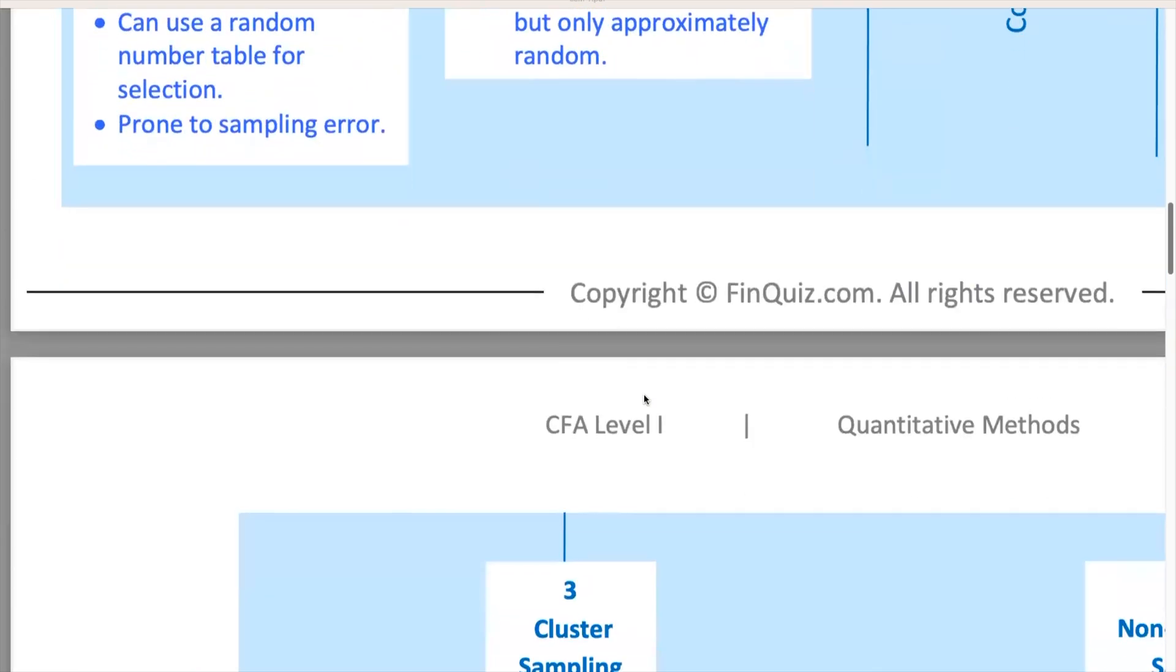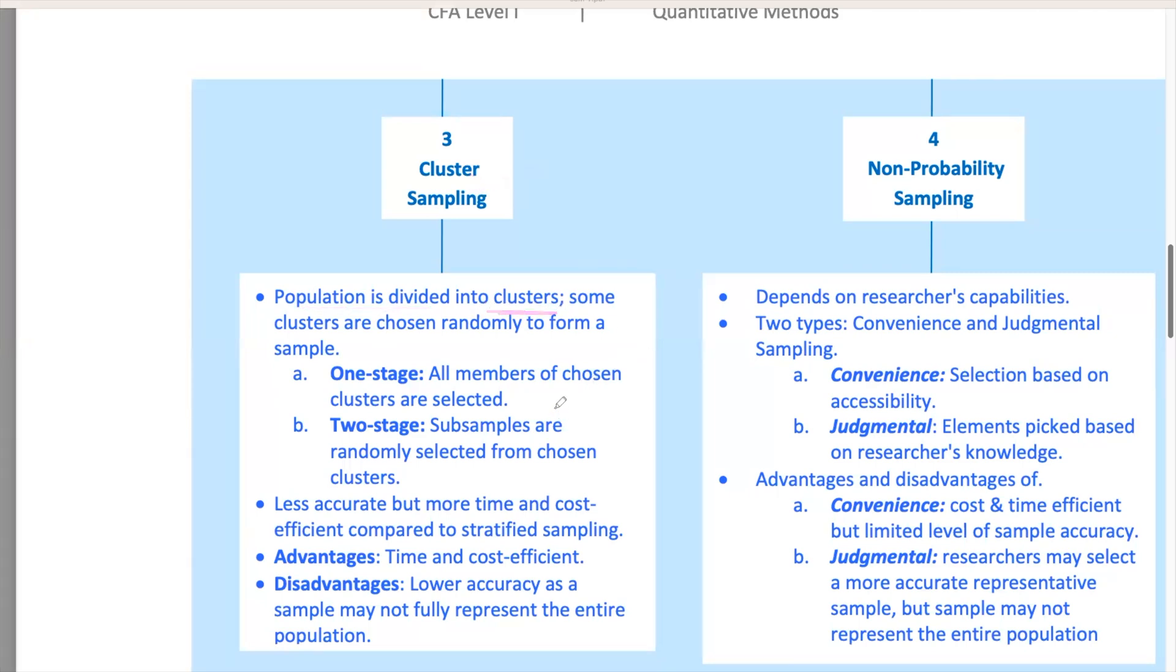Cluster sampling is where the population is divided into many representations of the whole. You randomly select entire clusters, then either take all members from those clusters, or a subsample. When all the members in each sampled cluster are included, this sample plan is known as one-stage cluster sampling. When a subsample is chosen randomly from each selected cluster, the approach is known as two-stage cluster sampling. This method is cost-effective and time-efficient, but can be less accurate if clusters are not well constructed. Suppose you're researching customer satisfaction in a chain of restaurants spread across a city. Instead of sampling individual customers from each location, you could randomly select a few restaurant locations, that is clusters, and survey all customers in those selected locations. It is one-stage cluster sampling. Cluster sampling saves time and resources, but requires careful selection of clusters to ensure they're representative.